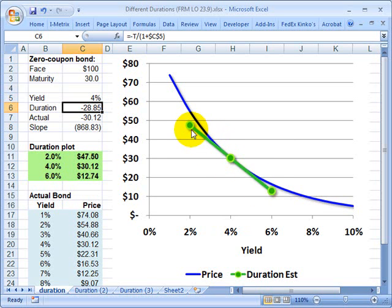And again, based on this linear approximation, first derivative. So you can see my duration in that case at 4% was negative 28.85. Again, meaning a 1% change in yield corresponds to a 28% change in the price of the bond.